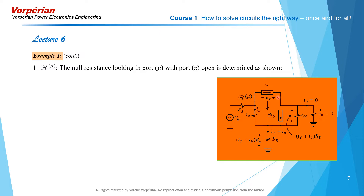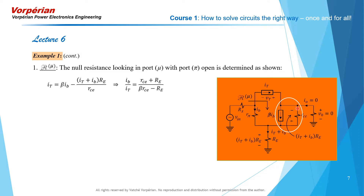We connect a test current source I_T between collector and base across port mu and determine the voltage V_T across it, while I_T and V_in together null the response V_out. When V_out is nulled, the current I_T flowing into the junction equals beta·I_B plus whatever current flows through R_CE, since there is no other current at that node. So we write: beta·I_B plus the current through R_CE equals I_T.